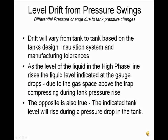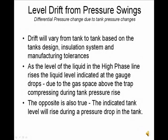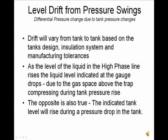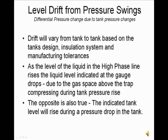The next series of slides will explain the differential pressure drift and the corresponding level drift due to a pressure swing. This drift will vary from tank to tank based on the tank's design, insulation system, and manufacturing tolerances. Very simply, as the level of the liquid in the high phase line rises, the liquid level indicated at the gauge drops. This is due to the gas space above the trap compressing during tank pressure rise. The opposite is also true — the indicated tank level will rise during a pressure drop in the tank.